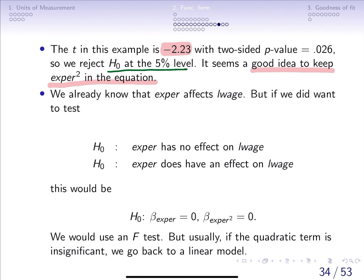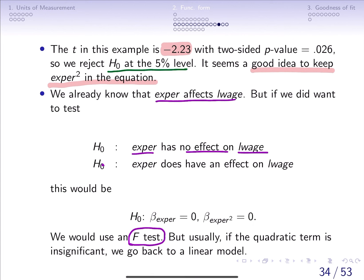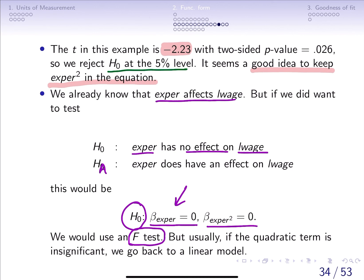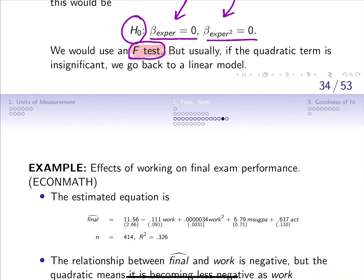Since we already knew that experience has effects on log wages, if we wanted to jointly test whether experience has no effect on log wage at all, we would use an F-test. The null could be written as: the population parameter on experience equals zero and the population parameter on experience squared equals zero. These are multiple exclusion restrictions, and we use an F-test to see whether experience has any effect on log wage.